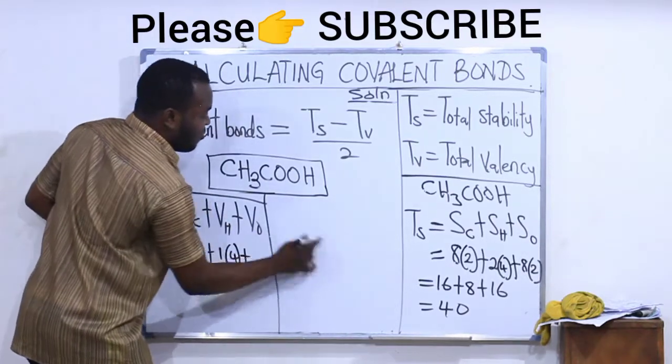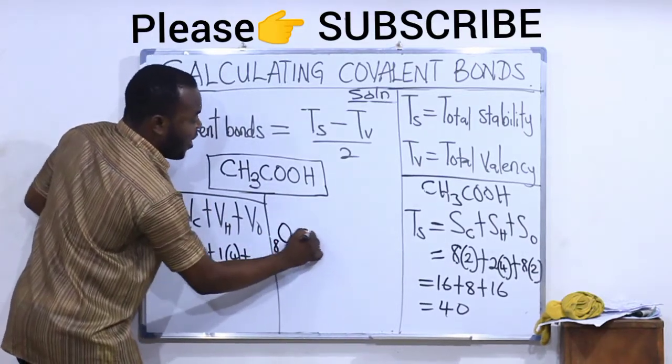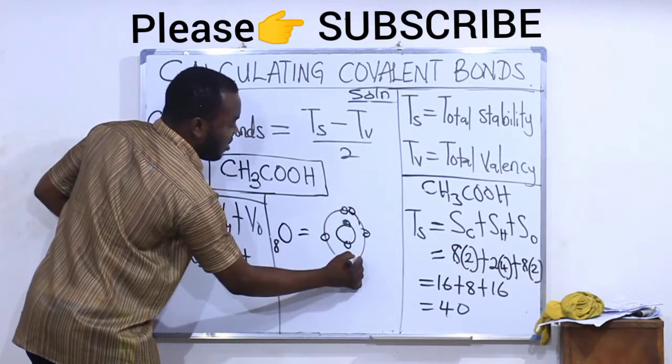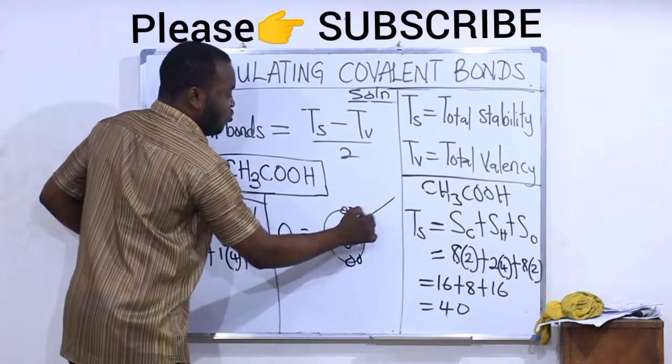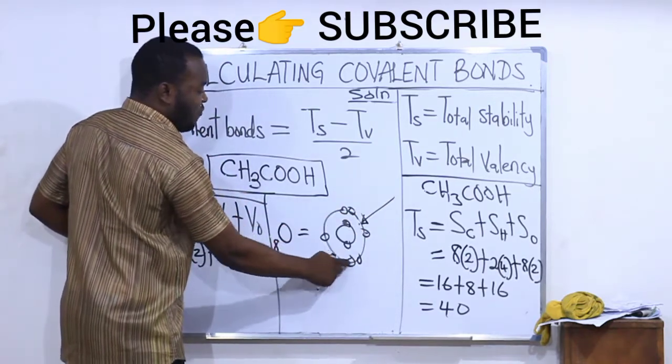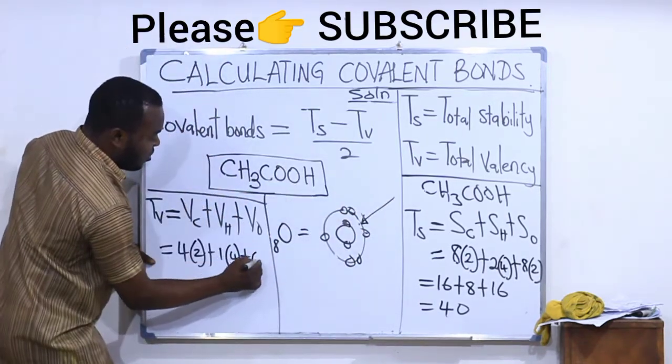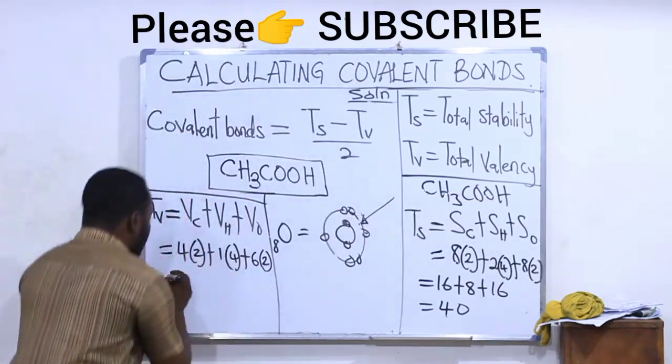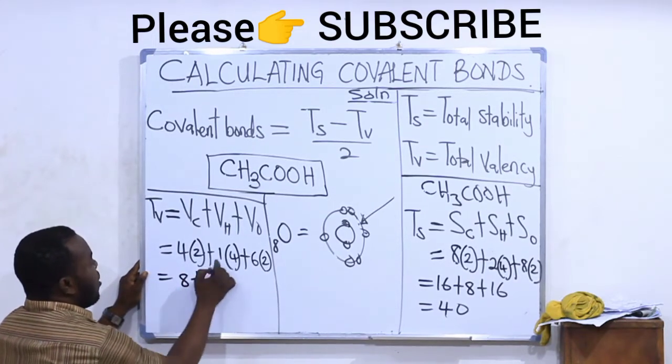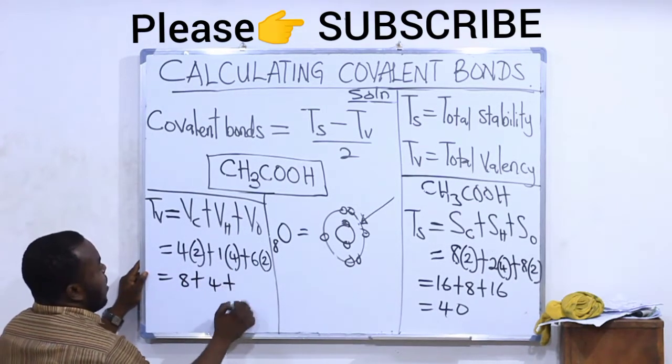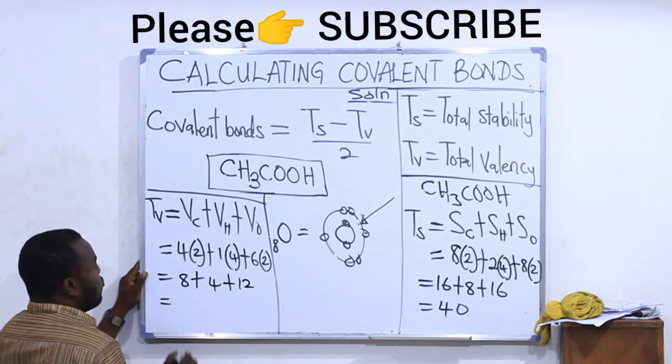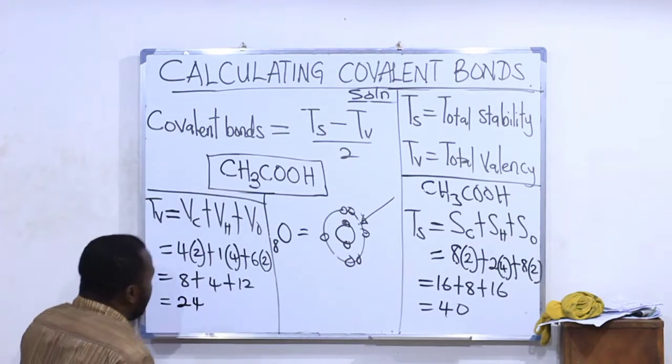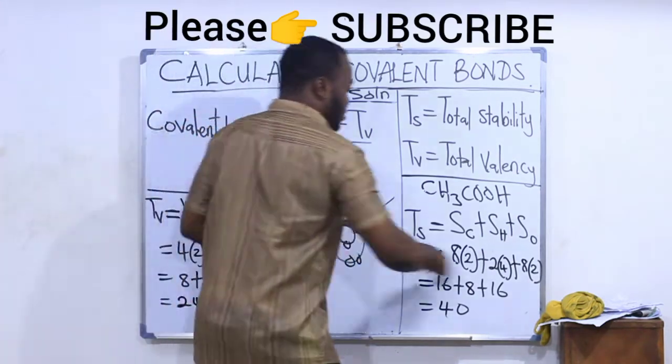Plus oxygen, the valency of oxygen. Oxygen is number 8. If I draw it, I'll have 1, 2, 3, 4, 5, 6, 7, 8. The valence shell, which is this one, has a total of 1, 2, 3, 4, 5, 6 electrons. 6 multiplied by 2. Why? Because I have 2 oxygens in the compound. So this will give me 4 times 2, 8. 1 times 4, 4. 6 times 2, 12. So I'm going to have 8 plus 4 is 12, 12 plus 12 gives me 24. So my total valency is 24.